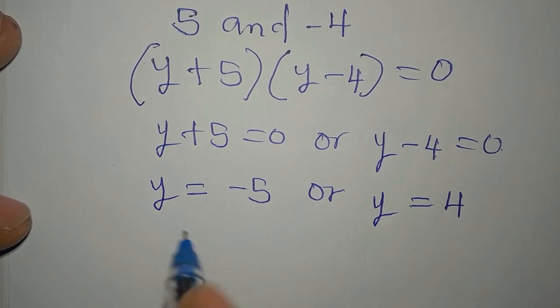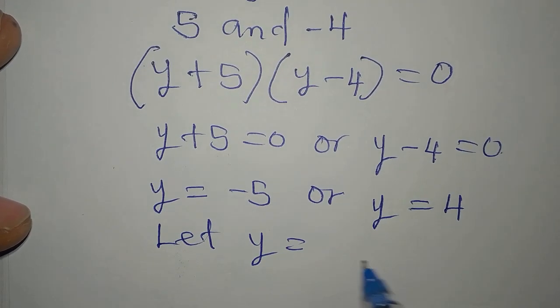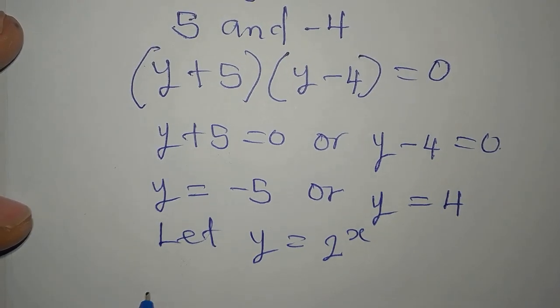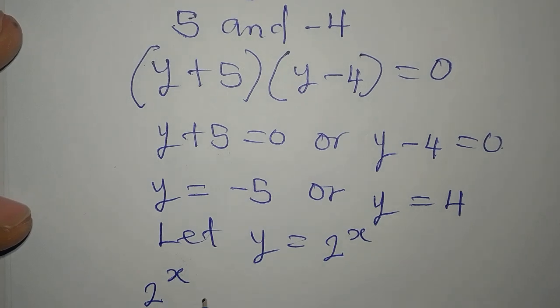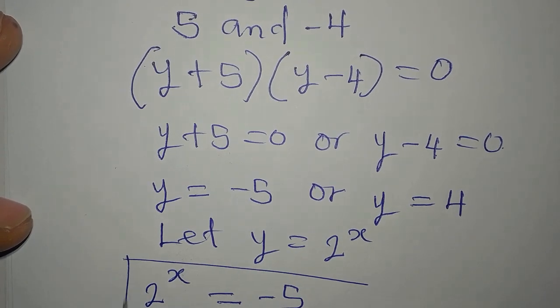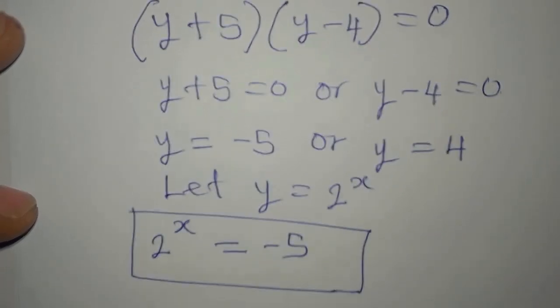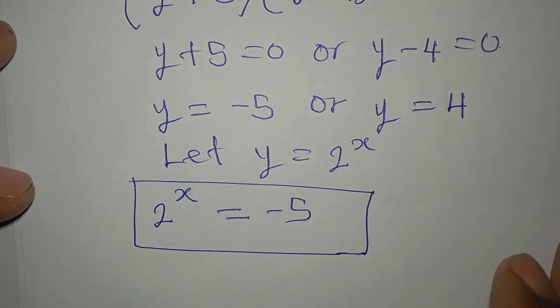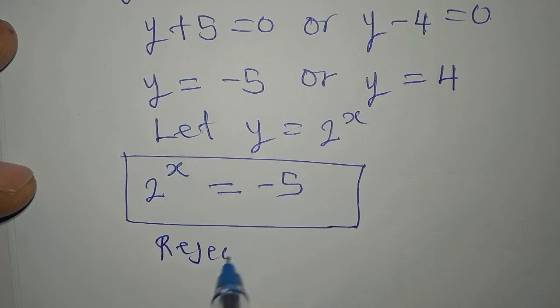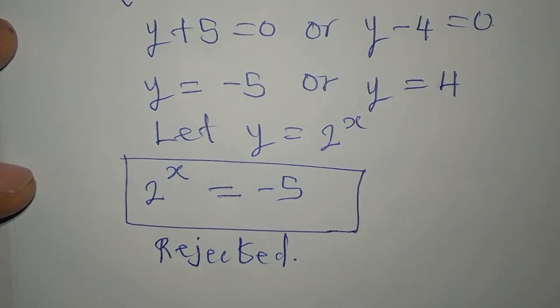But do not forget we said let y be equal to 2 to the power of x. So that means in place of this, I'll write 2 to the power of x to be equal to minus 5. And there is no real value of x will give us this. So this has to be rejected.